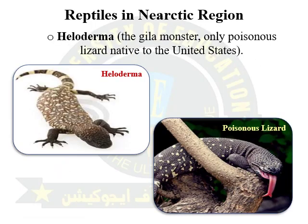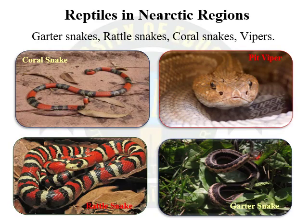The only venomous lizard in the world native to the United States is the Heloderma suspectum. Snakes of the Nearctic region include garter snakes, rattlesnakes, coral snakes, and vipers.